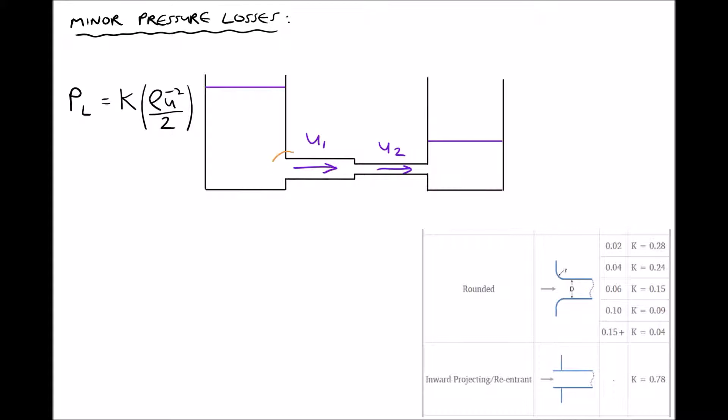Now the types of features that lead to minor pressure losses are things such as pipe inlets as we see on the left hand side, square reductions and square expansions. What we see pictured here is a square reduction, and also when we have a flowing fluid coming into contact with a static fluid as we'd see on the right hand side here.